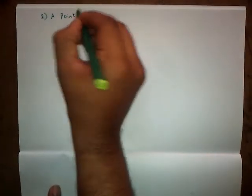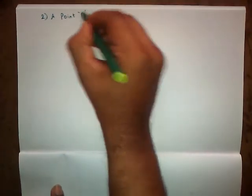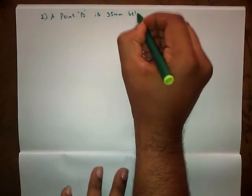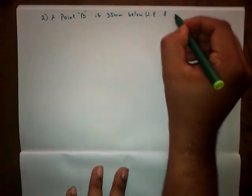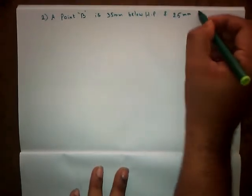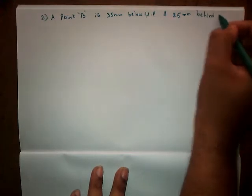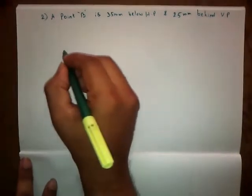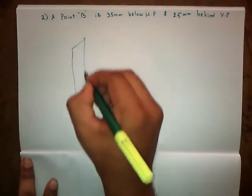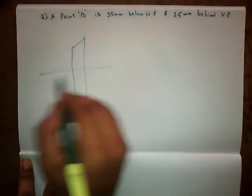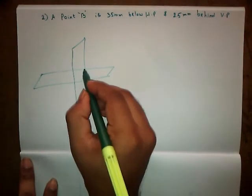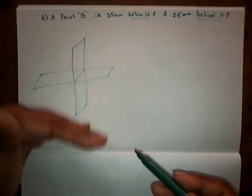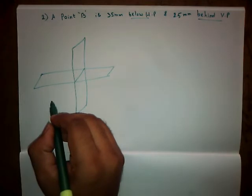Question 2: A point B is 35 mm below HP and 25 mm behind VP. So let us draw the quadrants. As I said below and behind, so below and behind it is going to be our third quadrant.